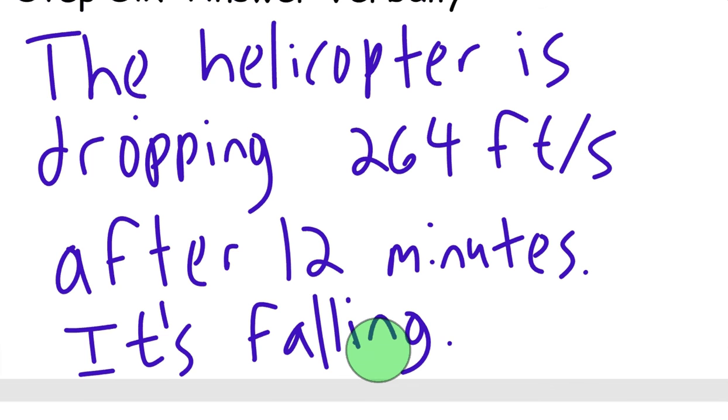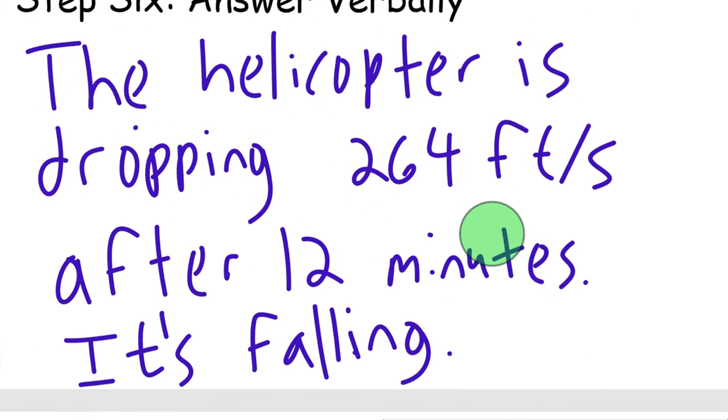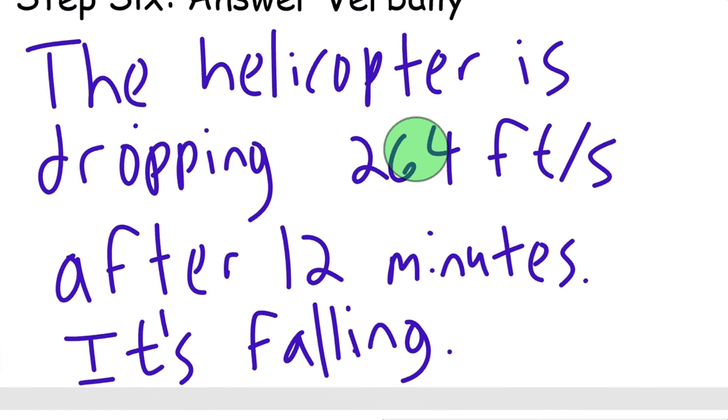So what does that number mean in terms of the context of this question? So final answer, the helicopter is dropping 264 feet per minute after 12 minutes, and that means it's falling. So when you give a reason for that, that's because the velocity was negative. Now, again, we could say the speed is 264 feet per minute, but for the sake of whether or not it's falling, we want to say the reason it's falling is because its velocity is negative, negative 264 feet per minute.